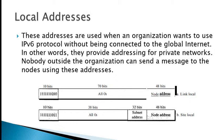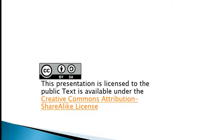Local addresses are used when an organization wants to use the IPv6 protocol without being connected to the global internet. In other words, they provide addressing for private networks, and nobody outside the organization can send a message to nodes using these addresses. Two types are defined for this purpose, as shown in the figure: the link local and the site local addresses. Thank you.